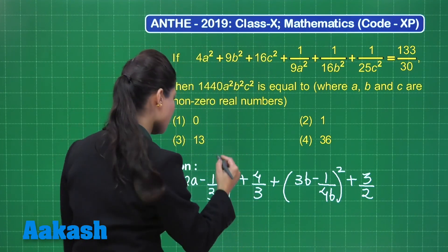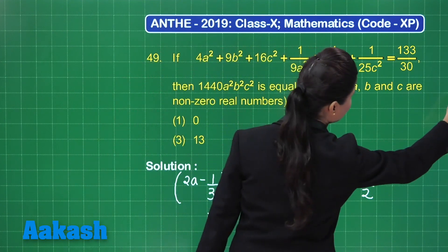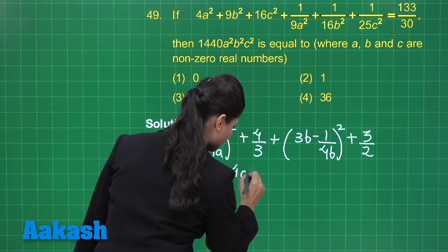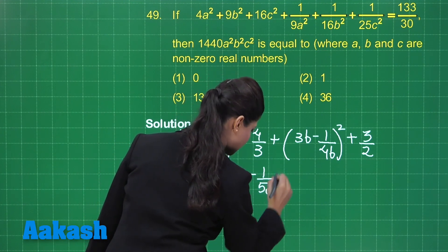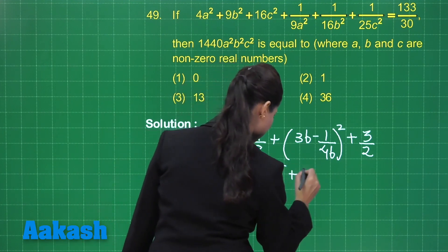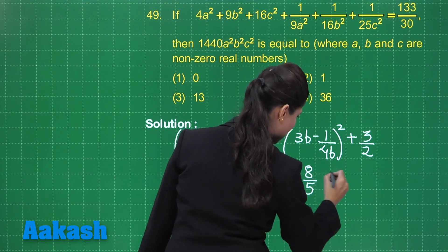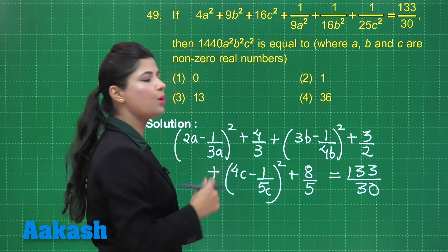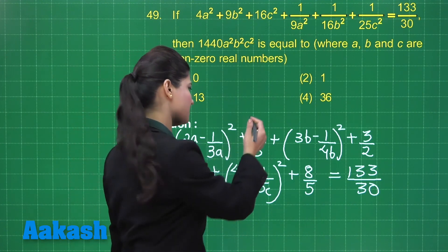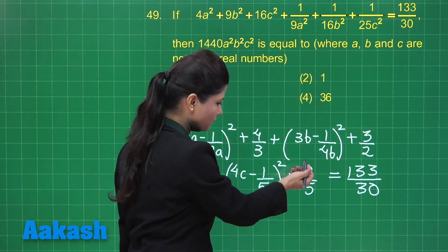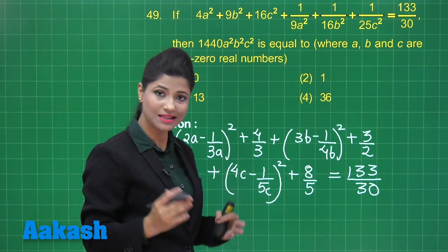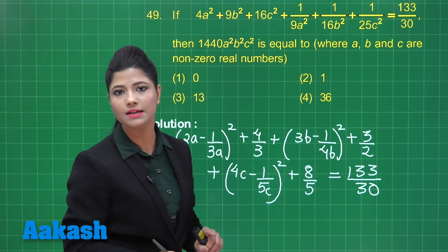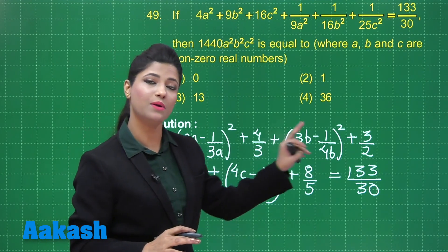Next, 16c² + 1/25c² can be expressed as (4c − 1/5c)² plus 8 upon 5. On the right-hand side we have 133 upon 30. On the left-hand side we have three constants: 4/3, 3/2, and 8/5. When you take the sum of these three, it equals 133 upon 30.